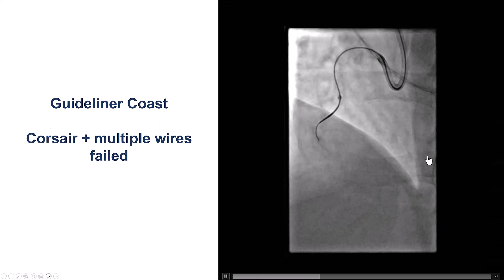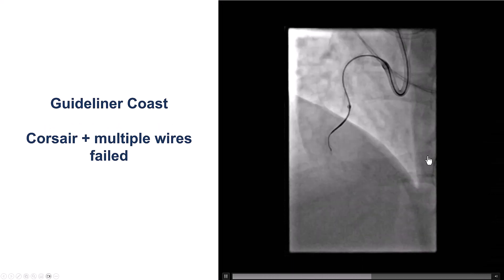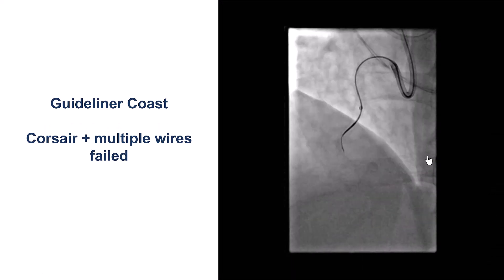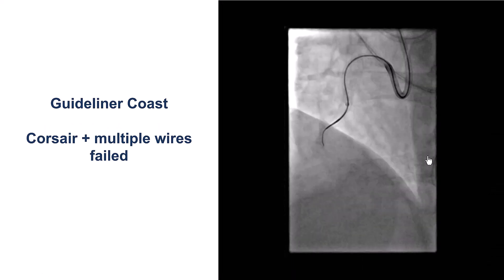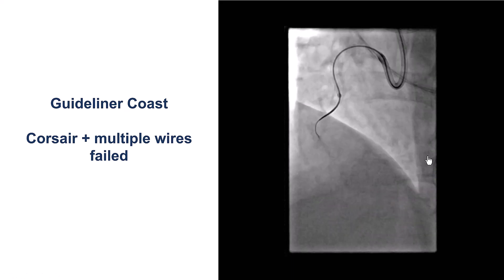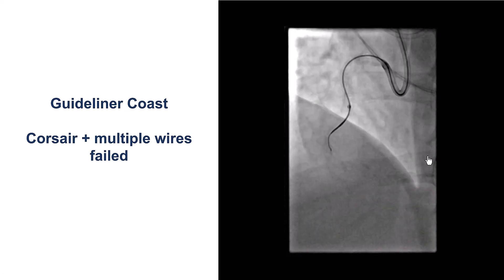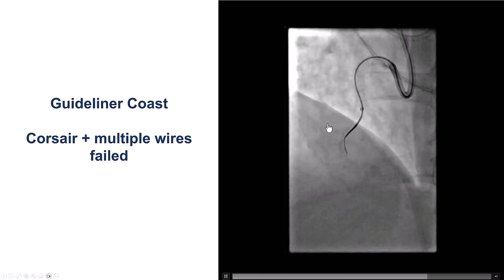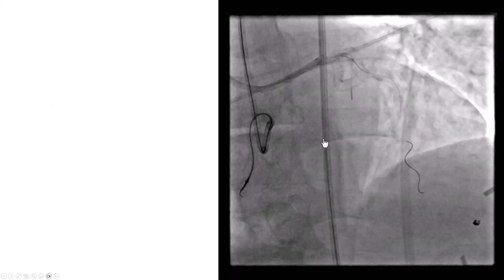We decided to start with antegrade wiring. We used an AL1 guide and a Corsair microcatheter and used multiple guide wires, but we were unable to cross through the mid-RCA CTO.